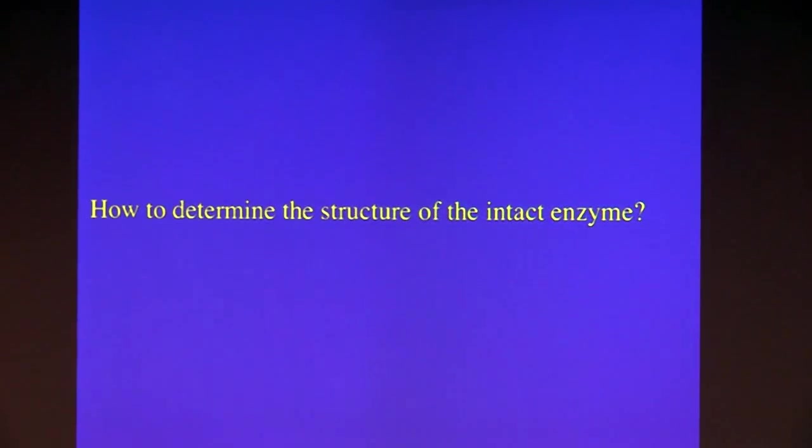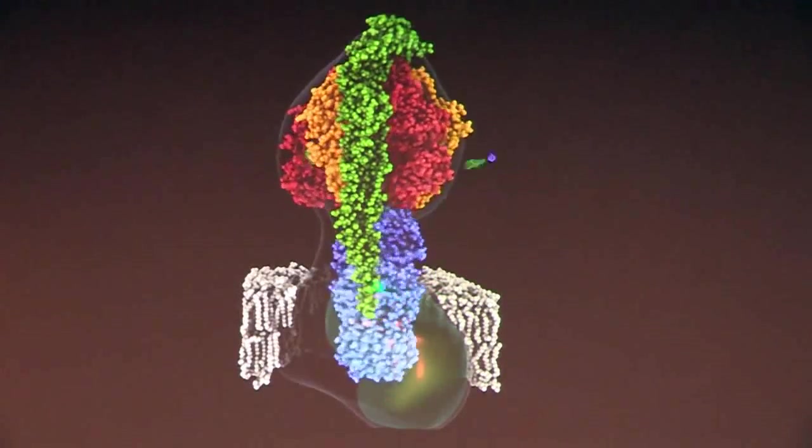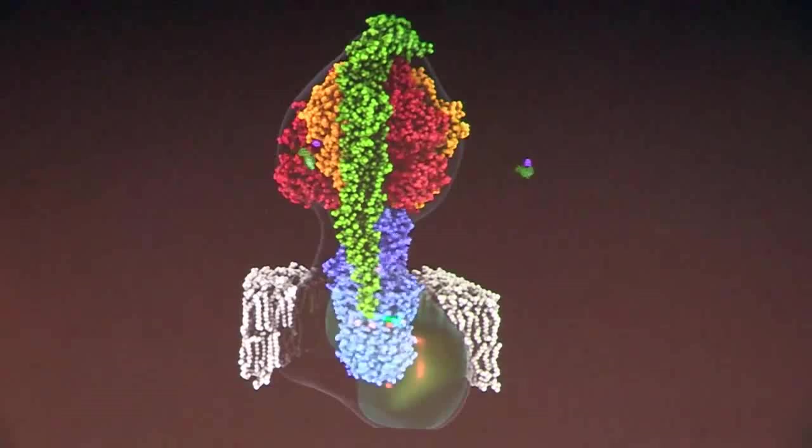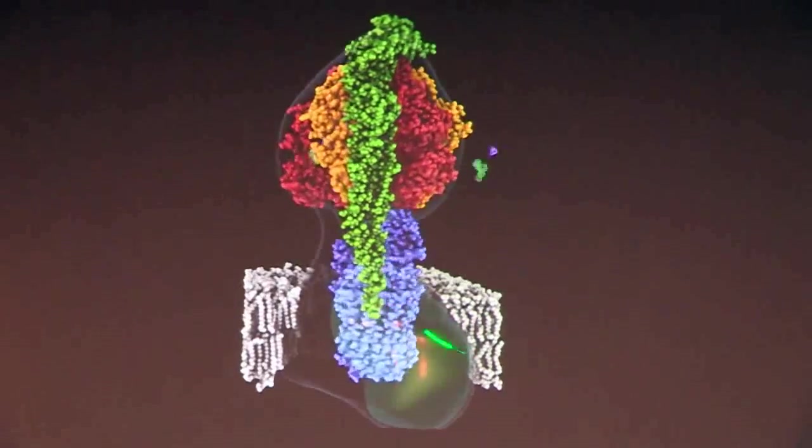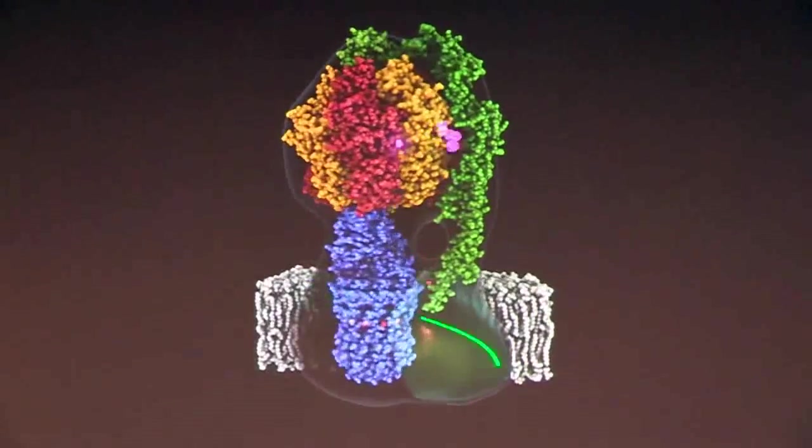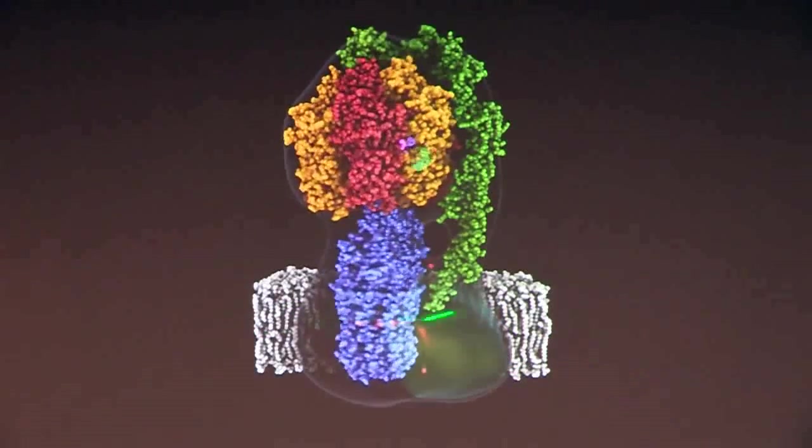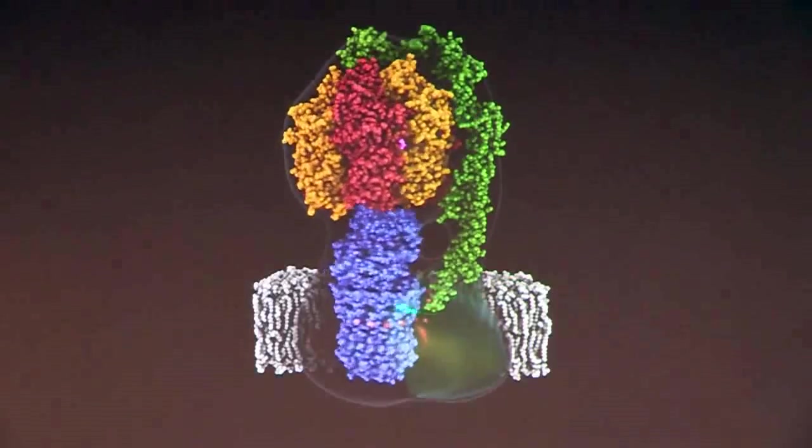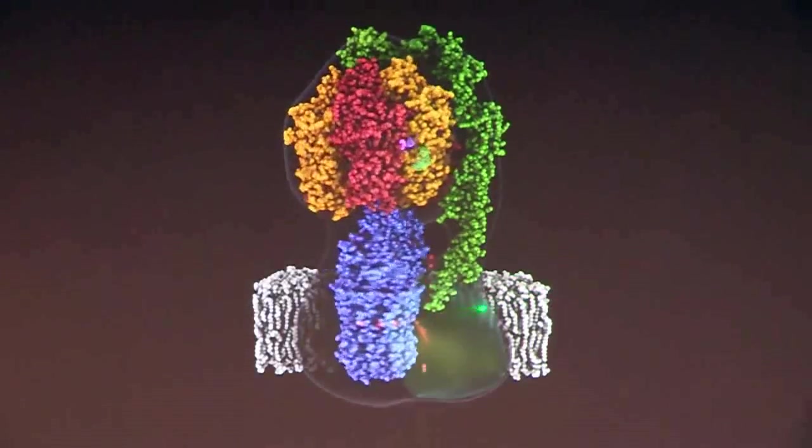And so this is the problem. How do you determine the structure of the intact enzyme? This ring rotates against the A protein at a very high rate. So this interface between the A protein and the C ring is inherently unstable, but you want to keep them in position in order to grow crystals, in order to resolve relevant structures.